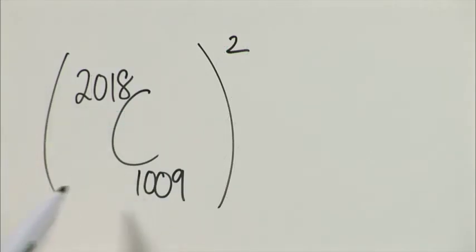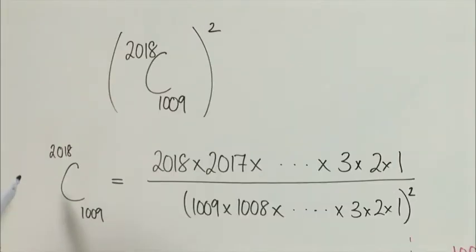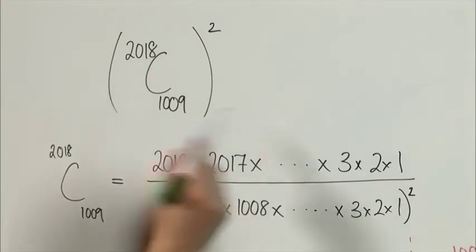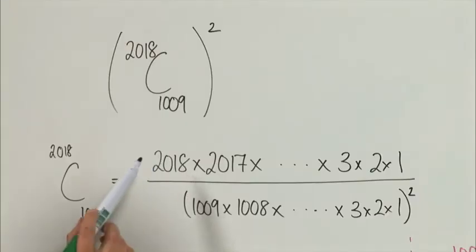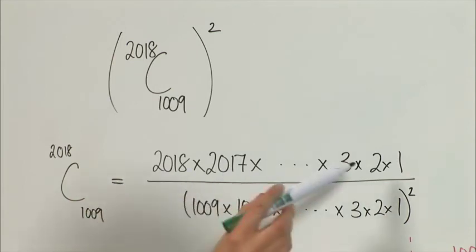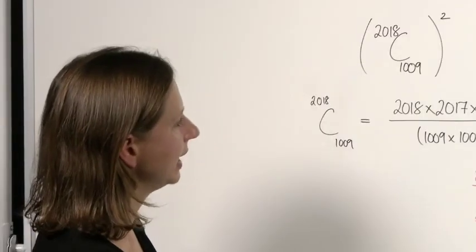So we've got a new expression for the number of different paths that Ada can take. And the good thing about this expression is that it is a product and not a sum. We need to look at the highest power of 10 that will go into this. We might as well just start by looking at the highest power of 10 that will go into 2,018 choose 1,009. So we have this expression and we need to look at the highest power of 5 and the highest power of 2 that will go into the prime factorization of the numerator and the denominator. And that is how we will work out the highest power of 10 going in here.